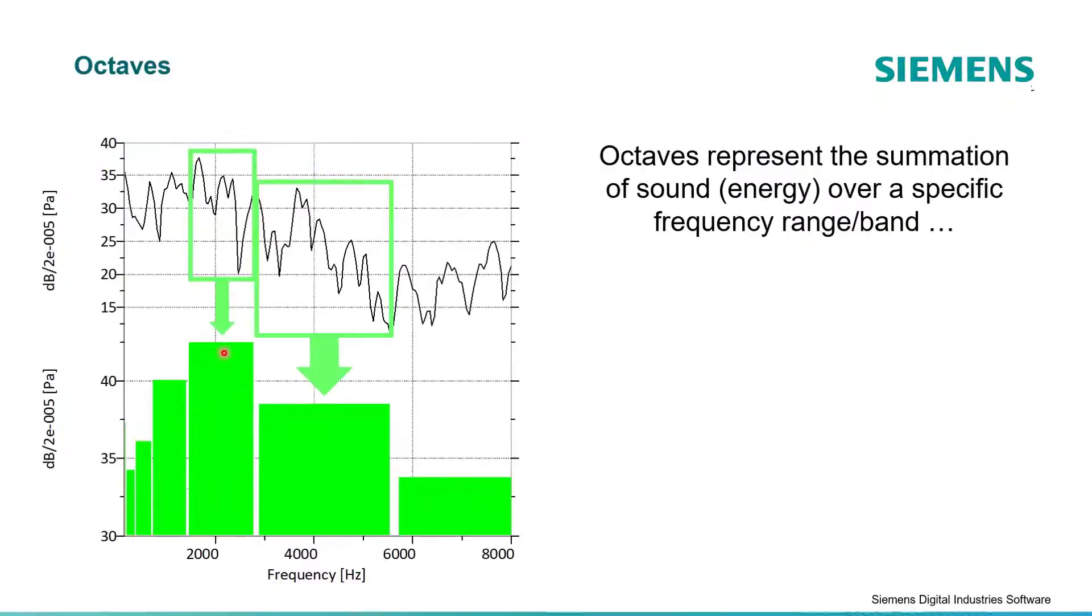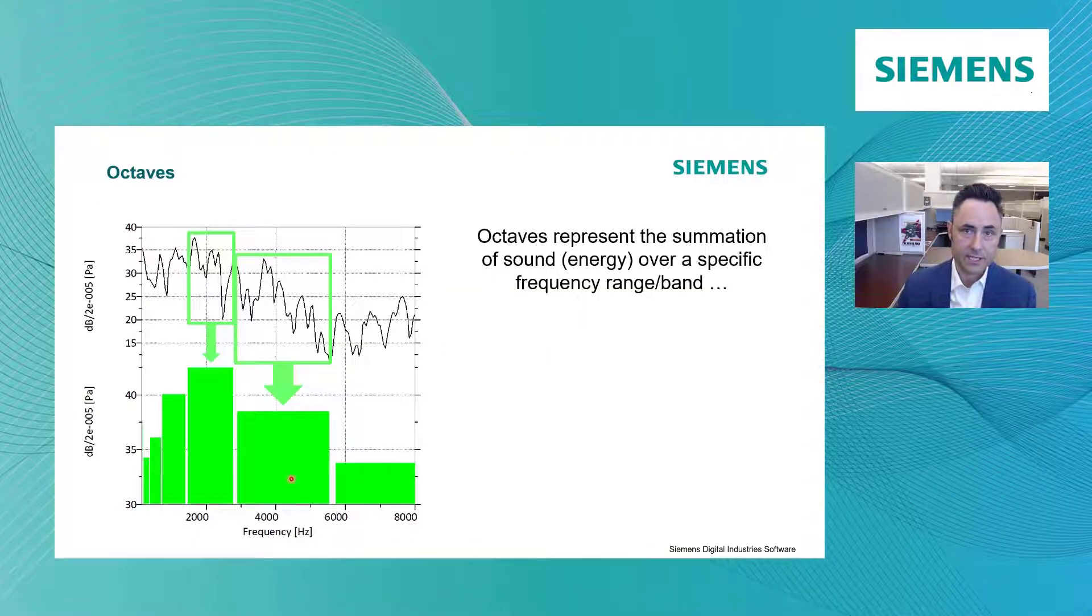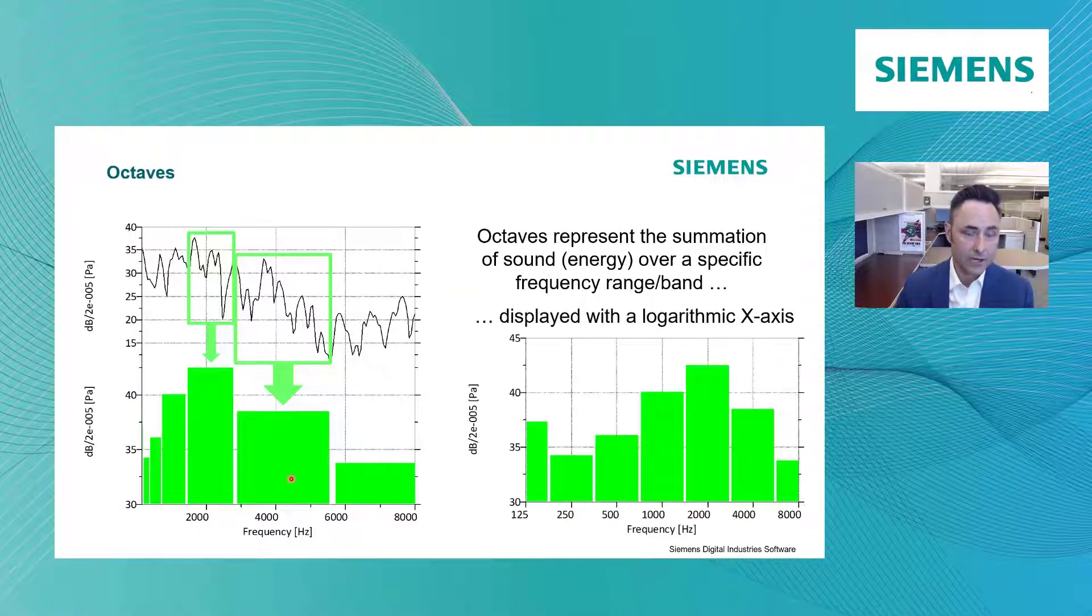And then I go up a chunk of frequency. And you notice this guy got a lot wider because there's actually twice as much frequency content that's being added together here to report for this green bar. And if I kept going up, there would be twice as much frequency information being summed together.